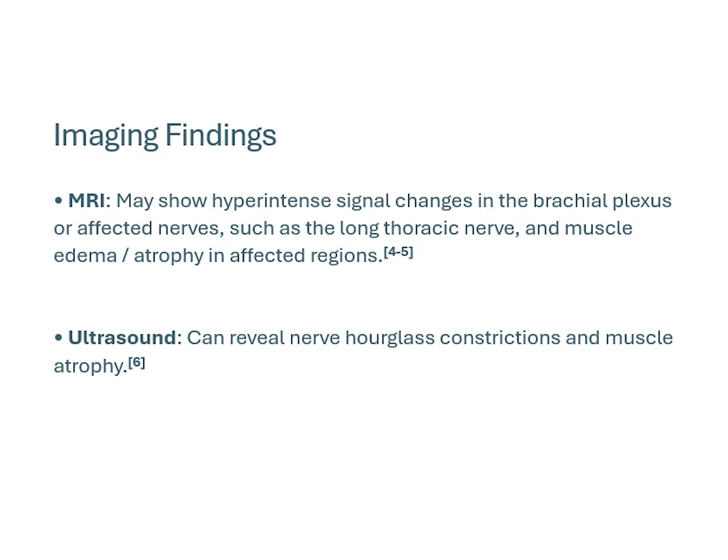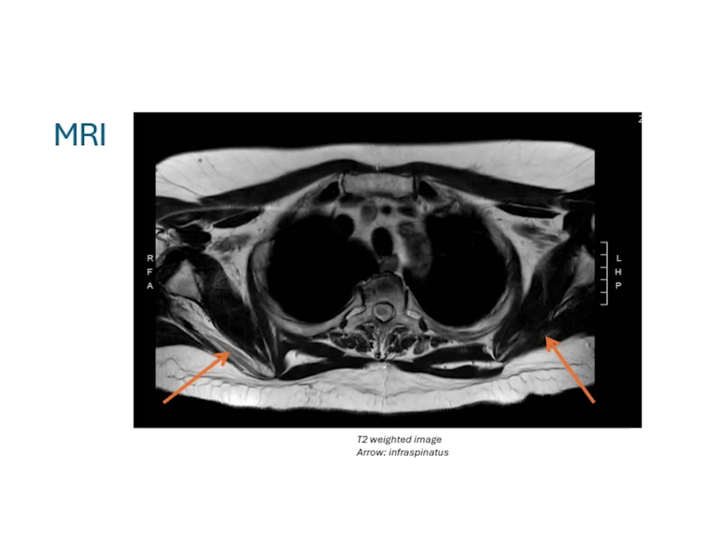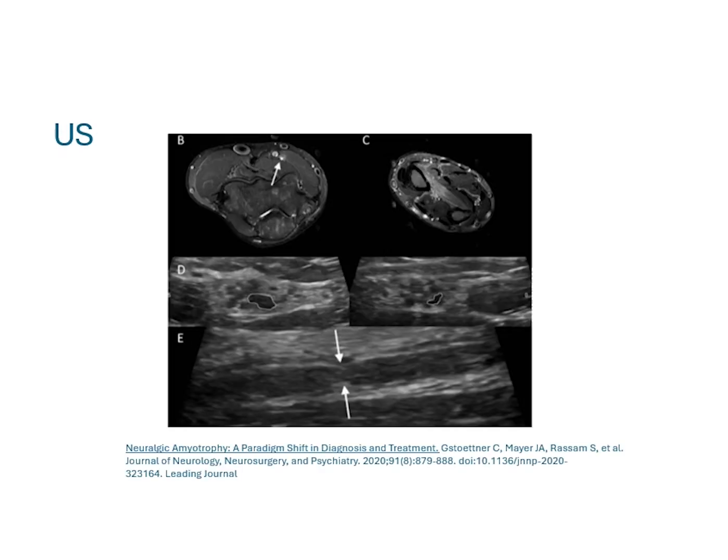Imaging may enhance your diagnosis. MRI may show hyper-intense signal changes in the plexus or affected nerves, and you may see muscle edema or atrophy in those affected regions. Ultrasound can reveal hourglass-like constrictions, which is pathognomonic for this condition, and will certainly show muscle atrophy as well. Here's an example MRI from our patient — an axial-cut T2-weighted image through his infraspinatus on his right side. You can see the infraspinatus with increased T2 signal indicating muscular edema, and compare it to the left side, which is normal. On high-resolution ultrasound, you can see an hourglass-like constriction.